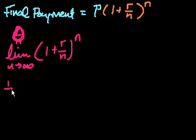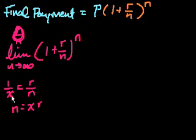Let's say that 1 over x is equal to r over n. If 1 over x is equal to r over n, what is this? Let's see, that means that n is equal to xr, right? I just cross-multiplied.